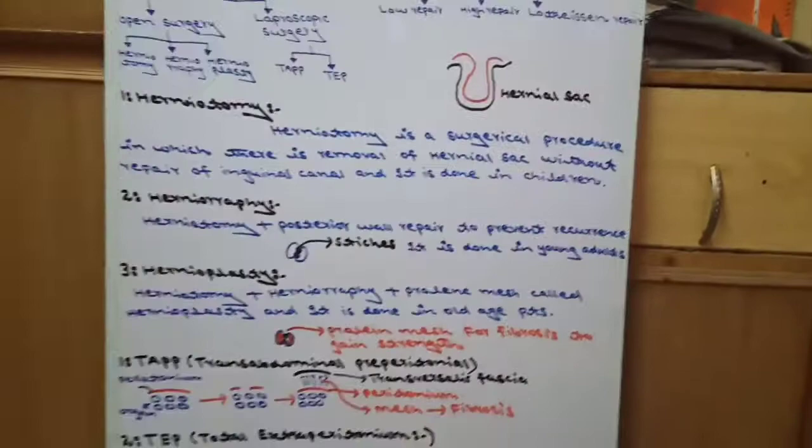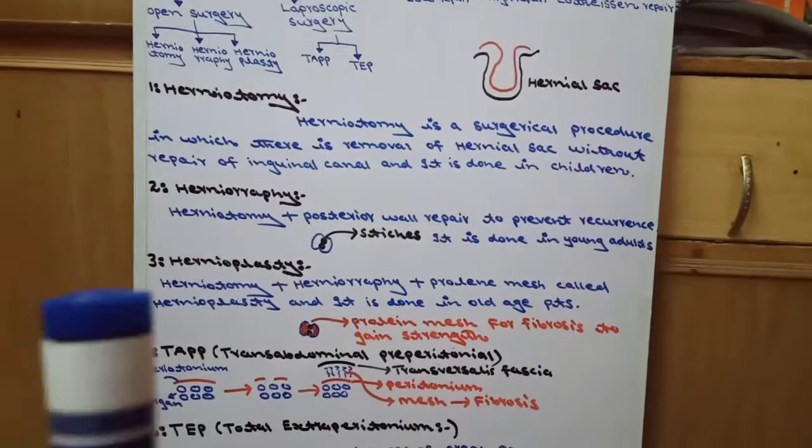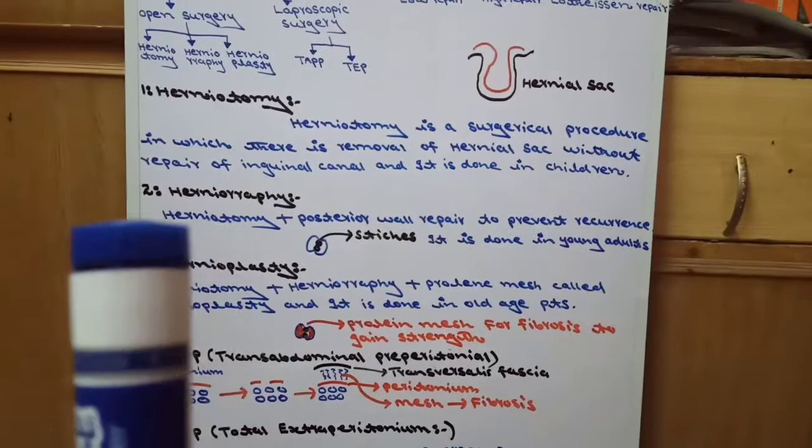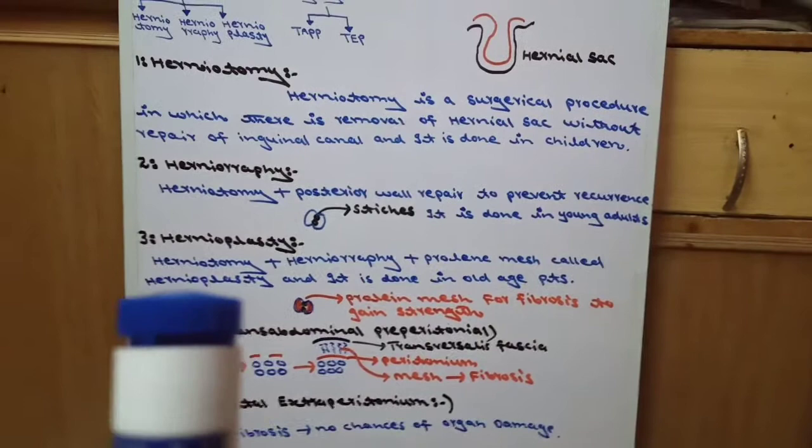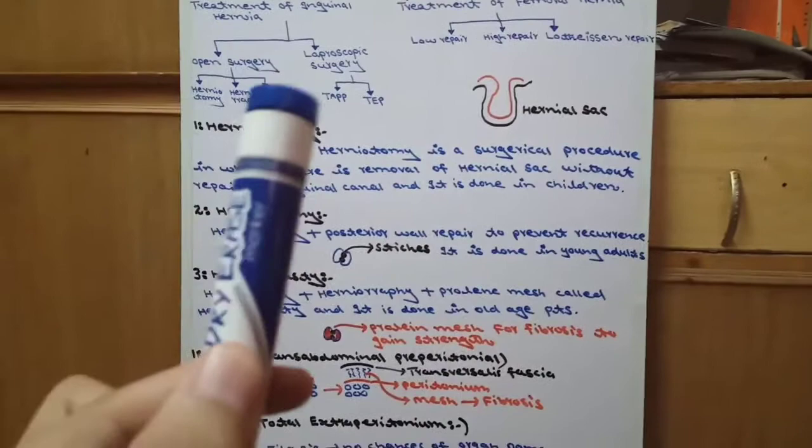Now we can see the comparison: herniotomy, herniorrhaphy, and hernioplasty. First, herniotomy we do in children. With age, we do herniorrhaphy in young adults. Hernioplasty we do in old age. In herniorrhaphy, posterior wall of inguinal canal is repaired. In hernioplasty, we do herniotomy plus posterior wall repair with stitches, plus prolene mesh is also applied to achieve fibrosis.